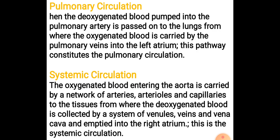Systemic circulation involves the distribution of oxygenated blood to all body tissues and the collection of deoxygenated blood through veins, finally delivering it to the right auricle of the heart.